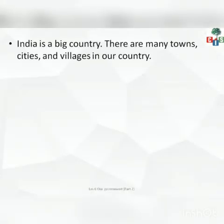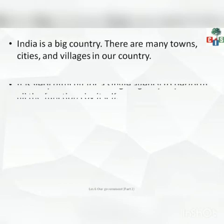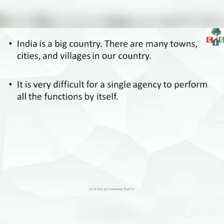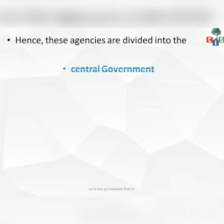Children, as you know that India is a very big country. There are many towns, cities and villages in our country — small towns, small villages, small cities. India is a very, very big country. So it is very difficult for a single agency to perform all the functions. India has 28 states and 8 union territories — one organization cannot look after all of India. So these agencies are divided into three parts.